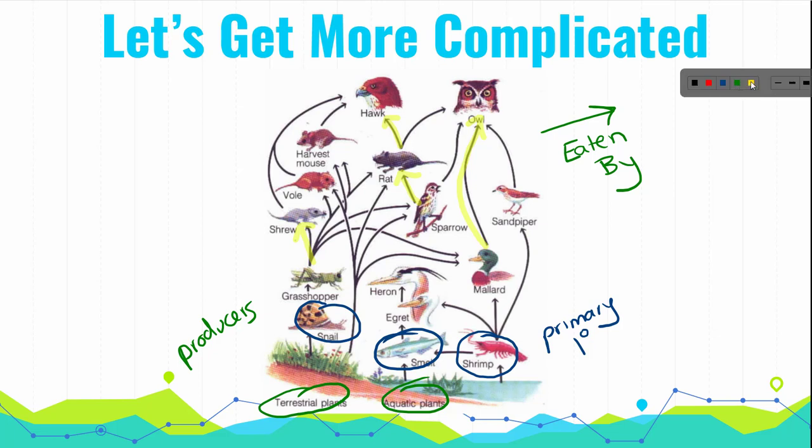From there, we have our secondary. Remember that our secondary, which we could also write as a two with a little zero, are the ones that eat our primary. So mallard, sandpiper, egret, this heron is here, heron, grasshopper, these are all secondary consumers.